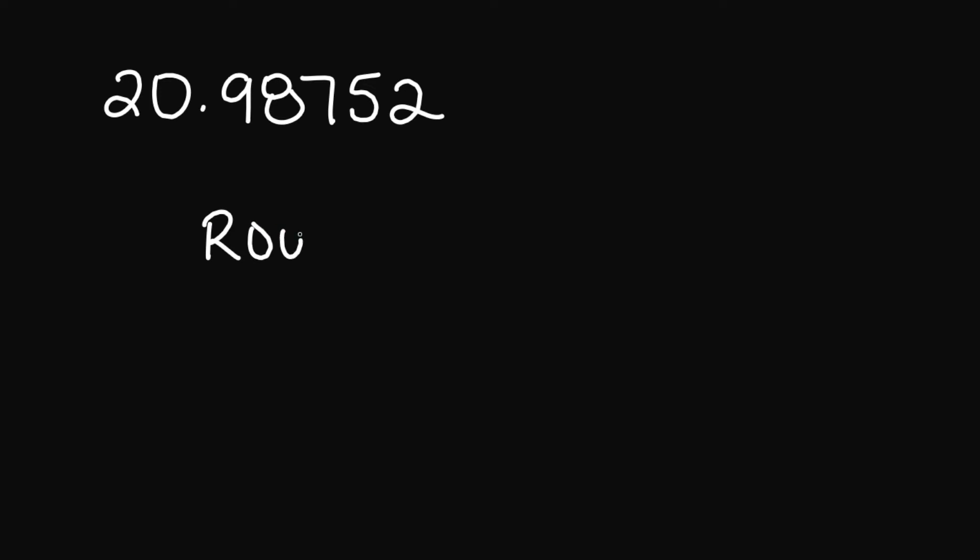Hey guys, so welcome back. Today we will be reviewing rounding and truncating. So let's look at our first example, 20.98752. We're going to round on this side and then truncate on this side.